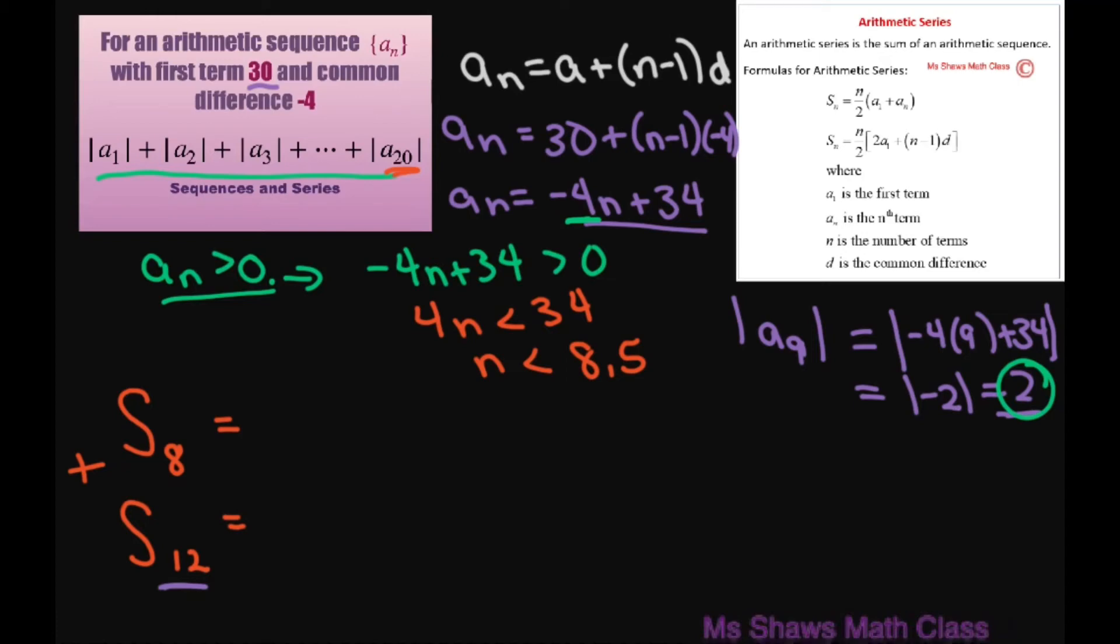Let's write out our sum. For the first sum, we have 8 terms. Using the formula, that's 8 times [2 times the first term 30, plus (8-1) times the common difference -4], all divided by 2.